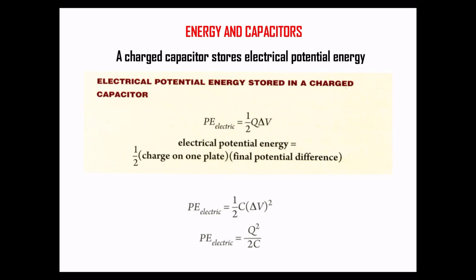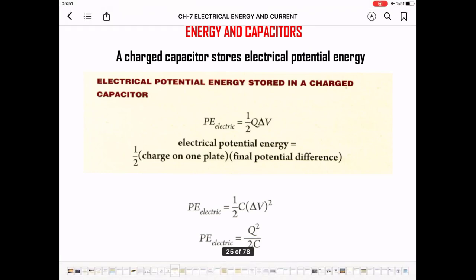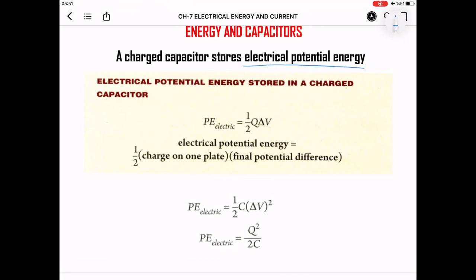Energy in a capacitor. When the capacitor charges — that is, when the capacitor stores charge — the charge is electrical charge, and if there is electrical charge, there is electrical energy. That energy is called electrical potential energy. The formula for it is: PE_electric = ½ Q × V. As we discussed before, C = Q/V, so Q = C × V, where Q is the stored charge, C is the capacitance, and V is the potential difference.